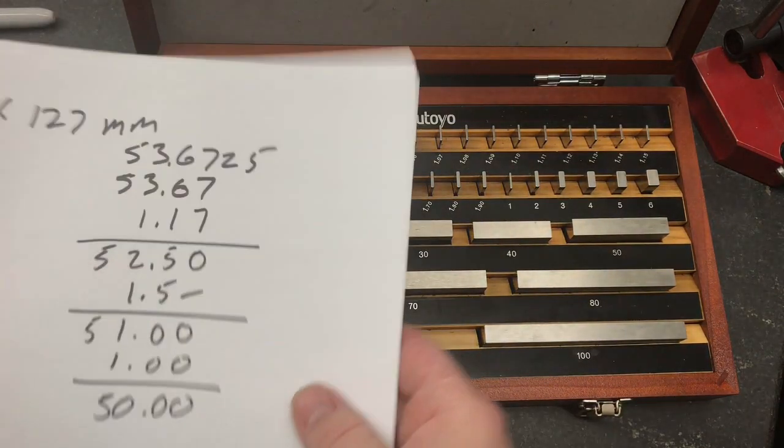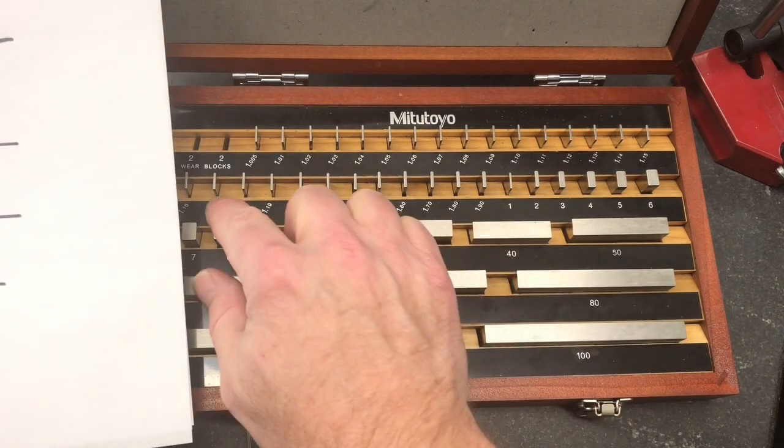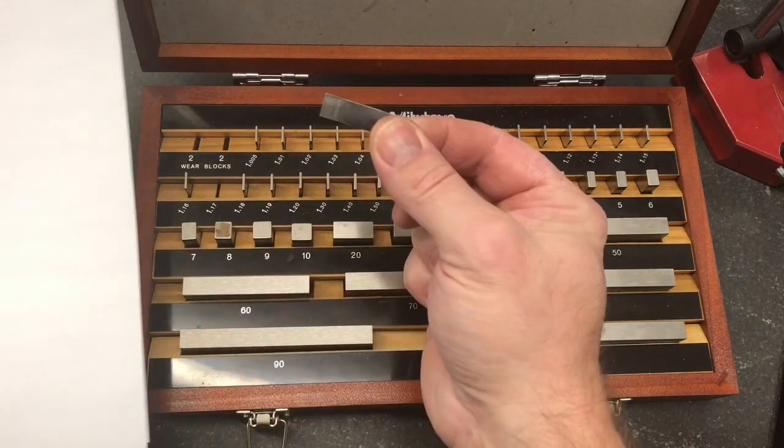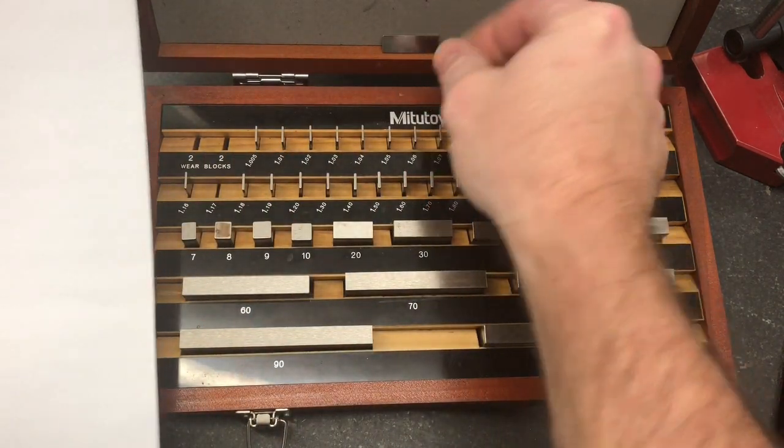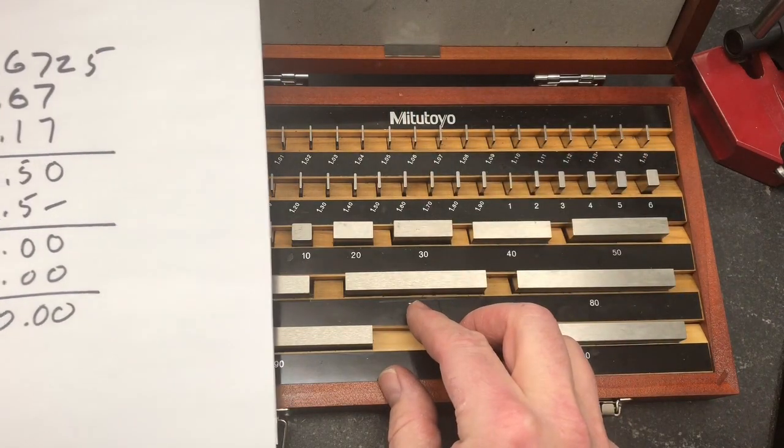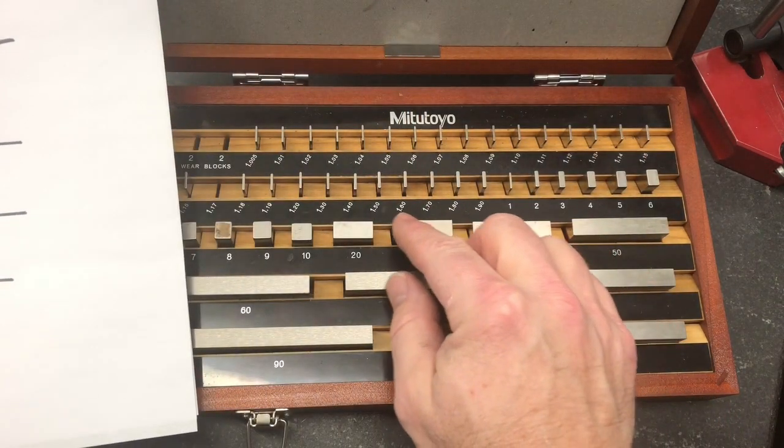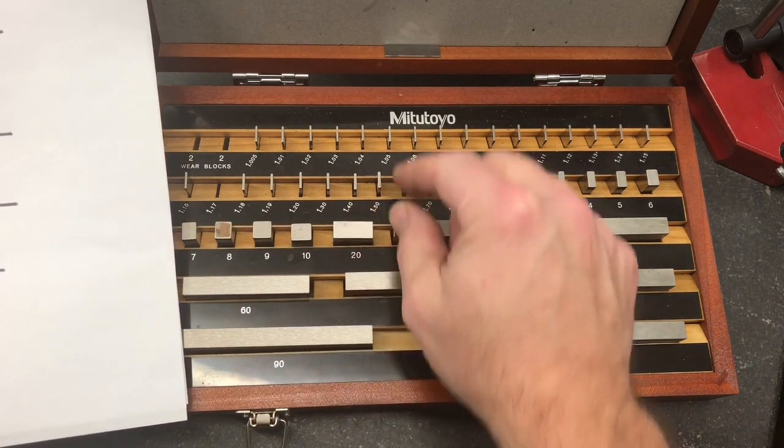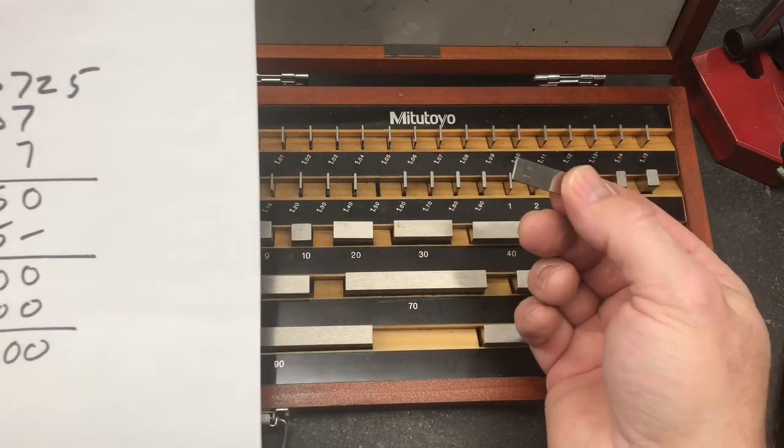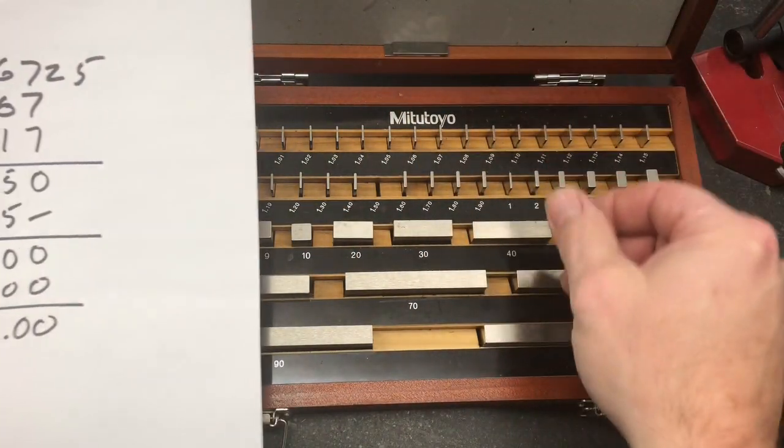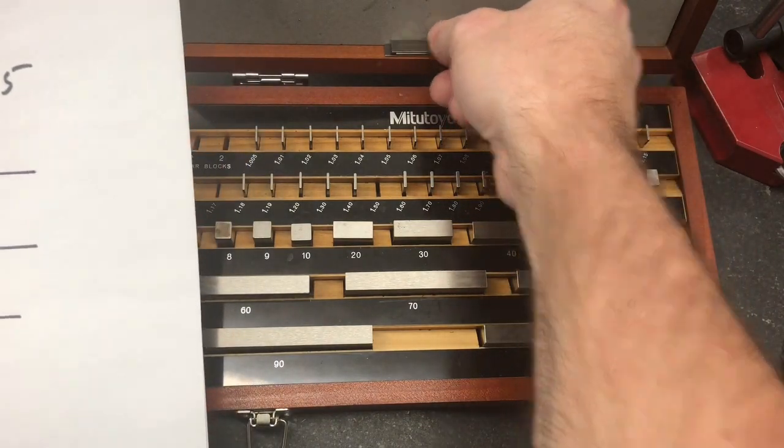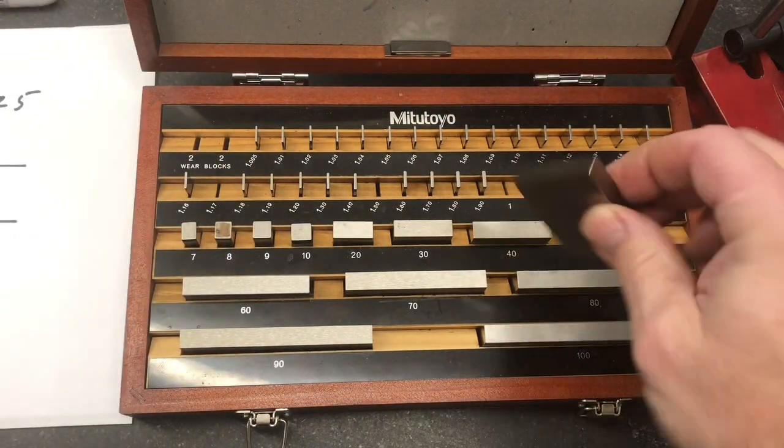So our first block is a 1, 7, 1, 1, 7 here. It's going to be our first block. Set that there. Then our second block. Our third block is going to be a 1.5. Our third block is going to be a 1 millimeter. And our 50 millimeter.